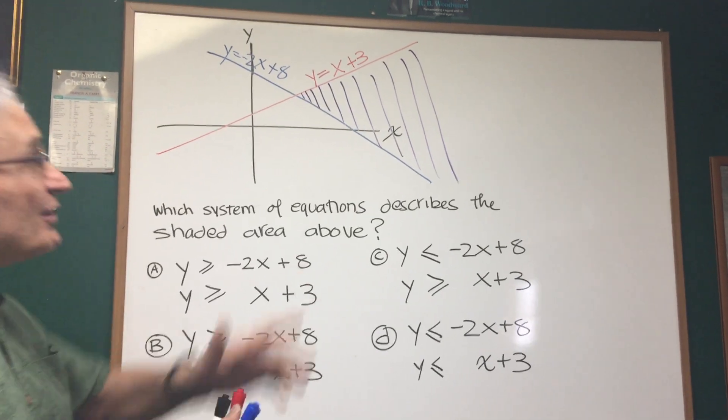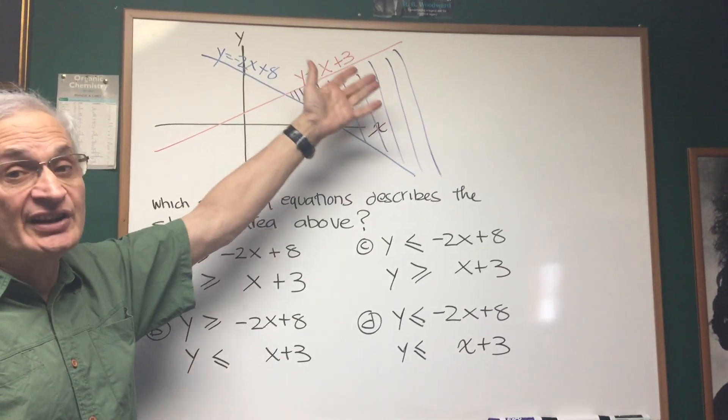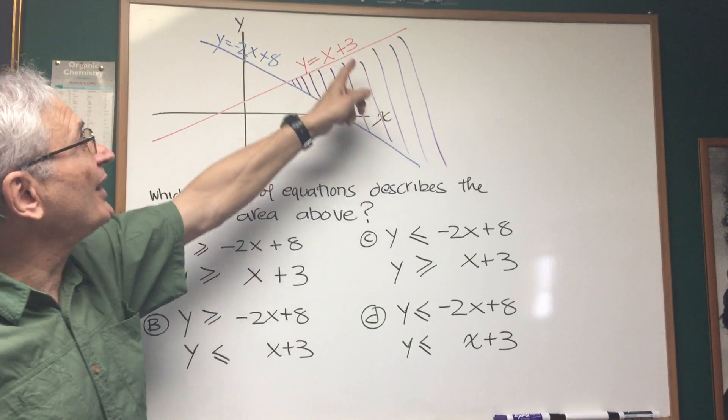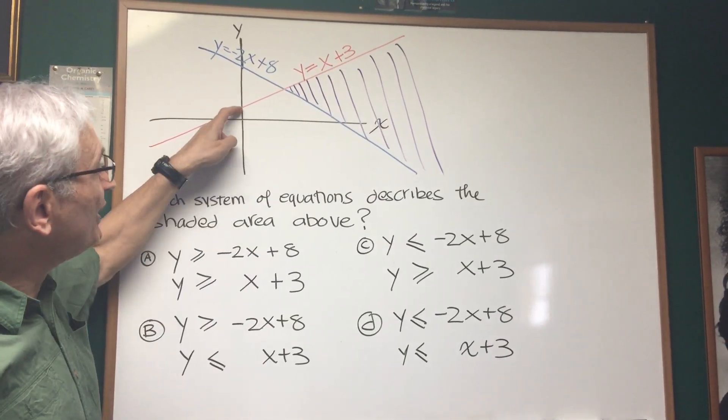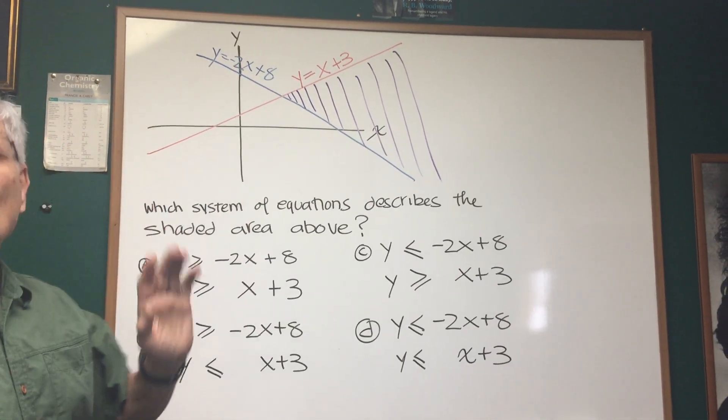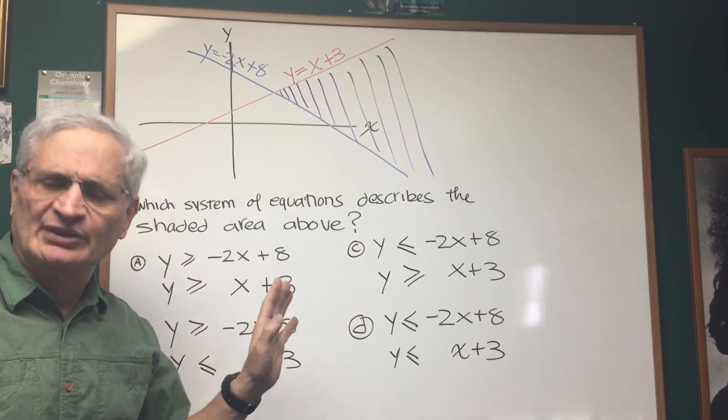And we can see that the y-intercepts of each of these are consistent with what's depicted on the graph. The y-intercept here is plus 3, the y-intercept here is plus 8. So we've got the line successfully labeled.